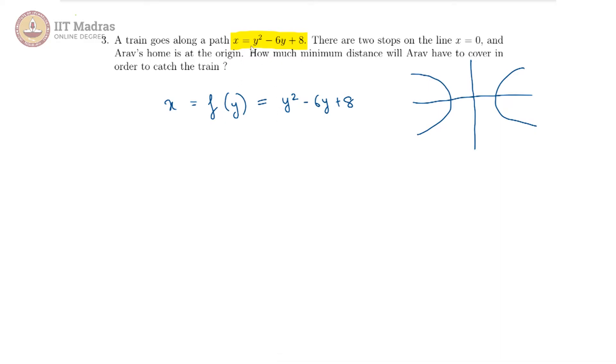We see that the coefficient of y square which is a is 1 and b is minus 6 the coefficient of y, and lastly the constant term c is 8.